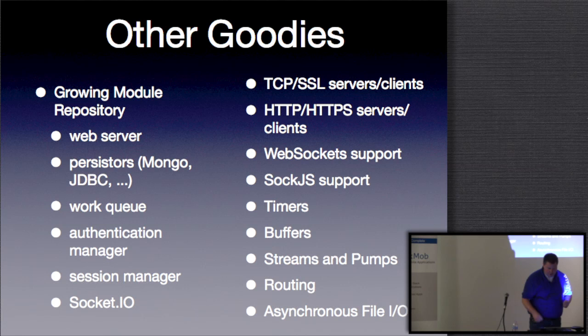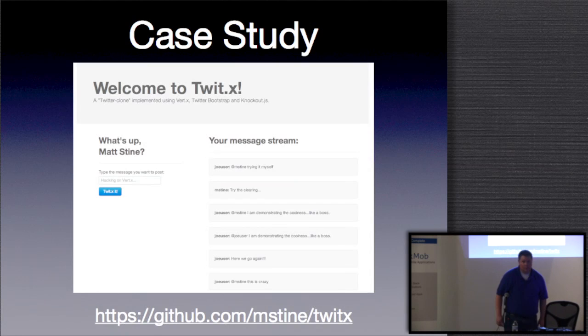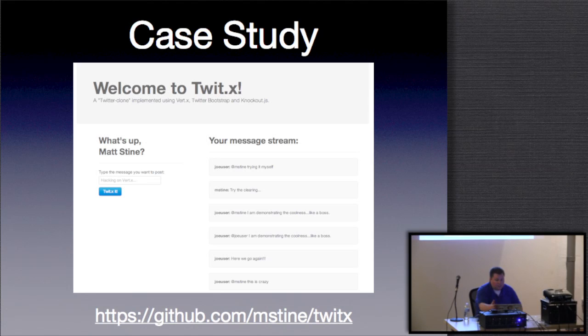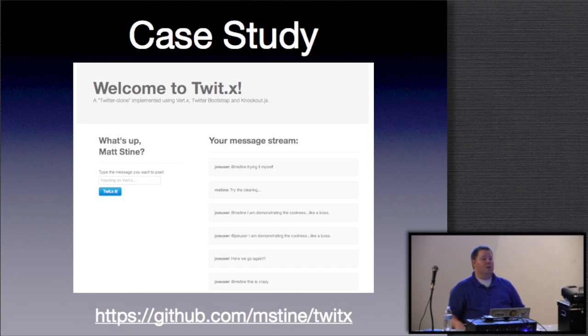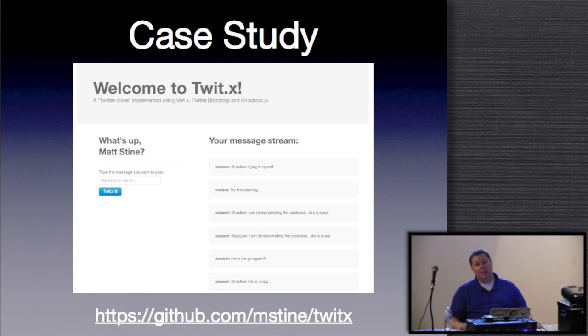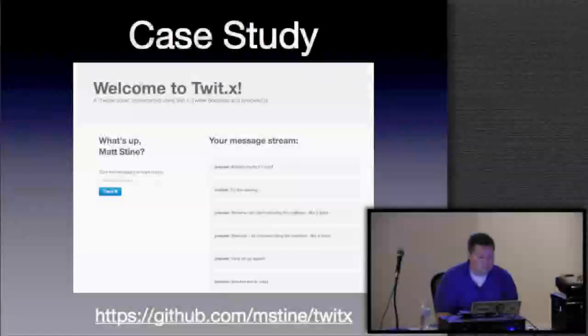The case study is a Twitter clone called TwitX using Vert.x, Bootstrap, and Knockout.js for event handling and binding in the browser. The code was pushed to GitHub this morning so you can pull it down and play with it. It's not quite ready for out-of-the-box consumption — there's some manual legwork to do in MongoDB. Over the next few days I'll get that documented and try to build features to make that work go away.